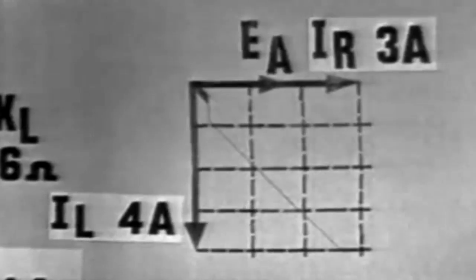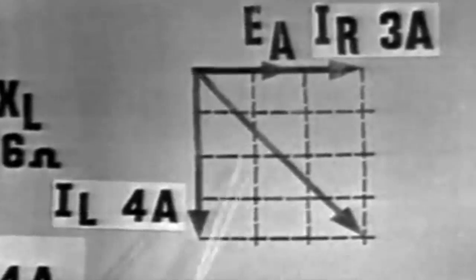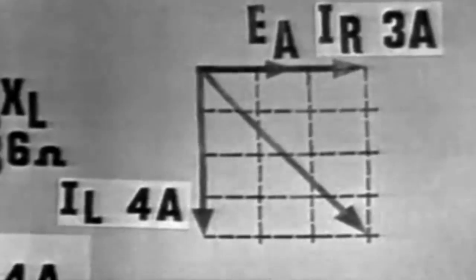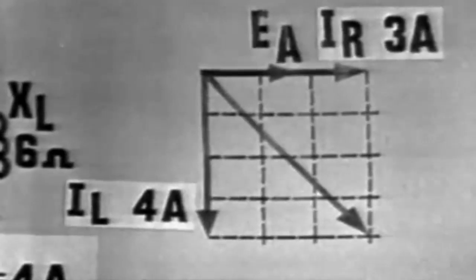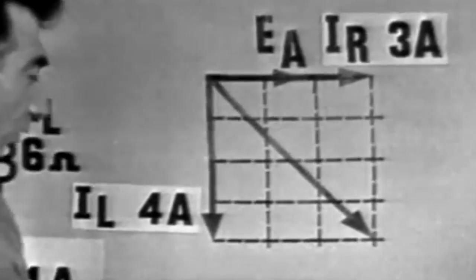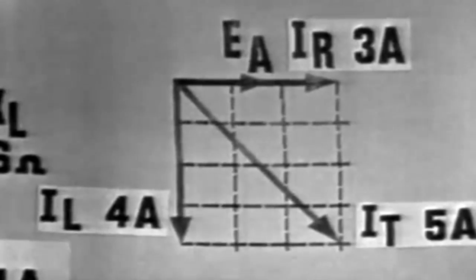Now, the total current may be found by simply measuring the resultant vector when we draw a parallelogram. Simply draw the parallelogram and measure the resultant vector. In this case, we would find it to be 5 units long, or IT, the total current, would equal 5 amperes.